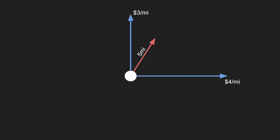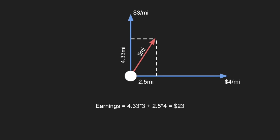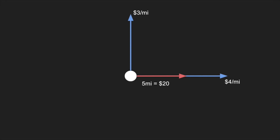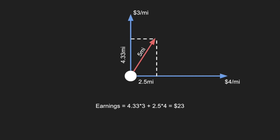But what if we went in some diagonal — say five miles in a diagonal direction? We'd have to figure out how much north and how much east we went by drawing lines to each axis. Let's say you go 4.33 miles north and 2.5 miles east, which totals five miles. We calculate earnings as 4.33 times three dollars per mile plus 2.5 times four dollars per mile, giving us twenty-three dollars — already better than just going completely east. So even though east is more profitable per mile than north, going diagonally actually earns more.